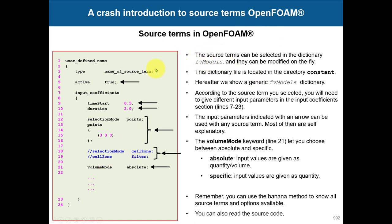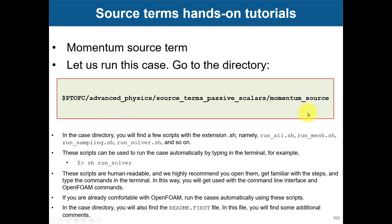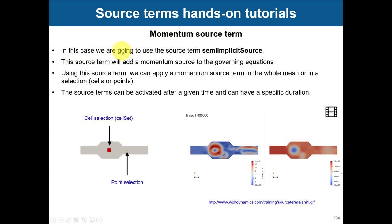You set the sources in this dictionary fvModels and this is the general structure. It will change from sources to sources so I'm not going to focus there, it's very different. Let's go to this case. We have it here: it's tutorial physics, you have sources, passive scalars. Let's go to this momentum source.